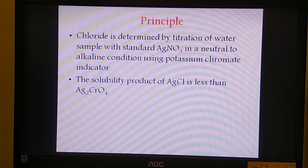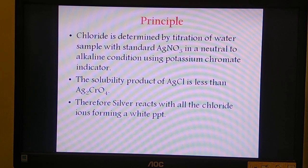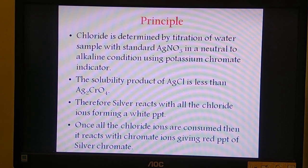Once all the chloride ions are used up in the water sample, forming a white colored precipitate, the silver ions react with the chromate ions present in the water sample to form a reddish or pinkish red colored silver chromate precipitate. So this is the principle behind the titration method.